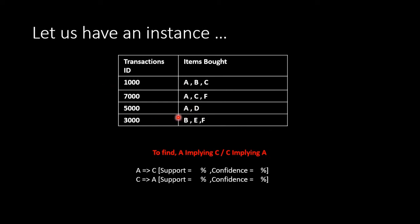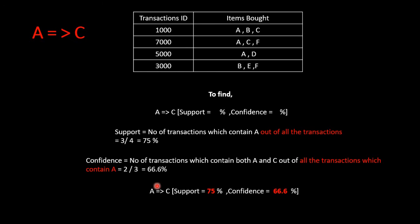All these are going to be analyzed and we are going to find out what is the support percentage and confidence percentage when we have A implying C or C implying A. We are going to analyze the first scenario where A implying C has to be found out — we are going to find out the support percentage and the confidence percentage.